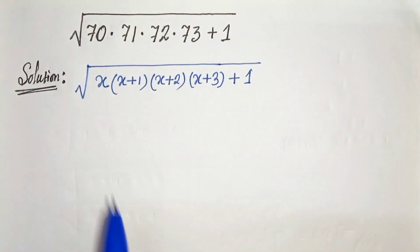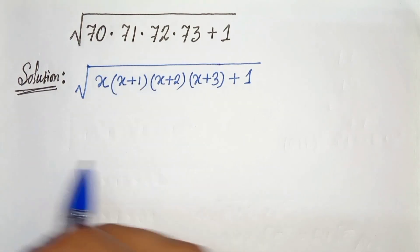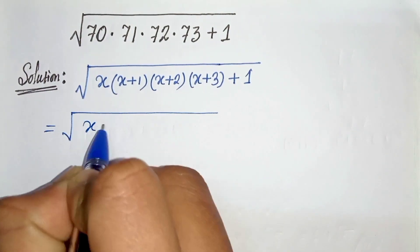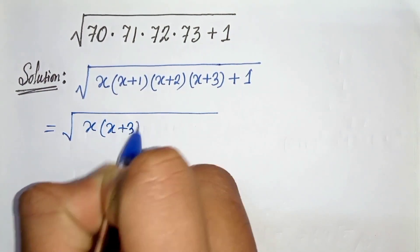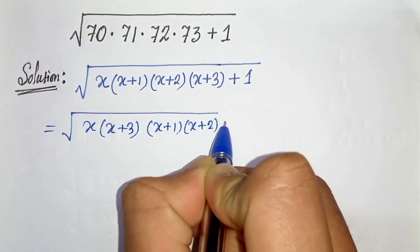In the next step, let's multiply x and x plus 3 and x plus 1 and x plus 2. Let's rearrange this first. x times x plus 3 and x plus 1 times x plus 2 plus 1.